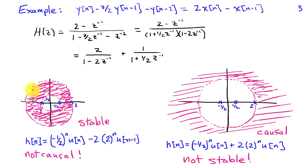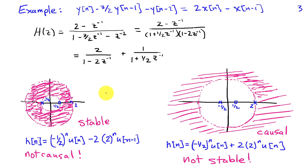Let's plot the poles and zeros. We have a pole at minus one-half, another pole at 2, and a zero at one-half. For this system to be stable, we want the ROC to include the unit circle, which implies the ROC has to be a donut extending between the radii of the two poles. Using this ROC to find the inverse Z transform, we obtain H of n equals negative one-half to the n times U of n, minus 2 times 2 to the n times U of negative n minus 1. This system ends up being stable, but it turns out it's not causal.